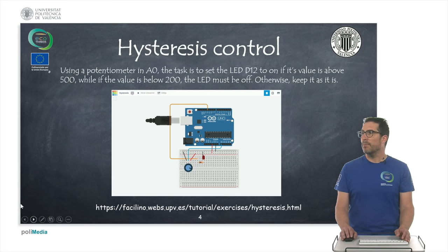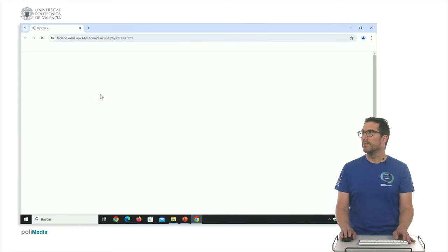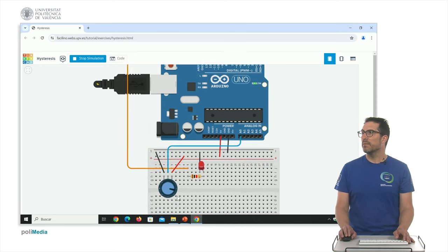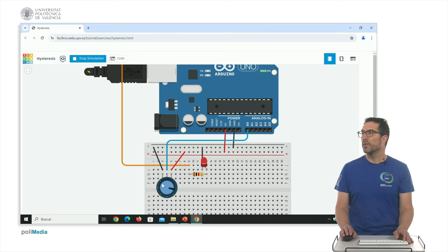Let me run the example so you will see how it works. Let me start the simulation. In this case, because of the position of the potentiometer, 500 is more or less in this position of the wiper. Because of the position of the potentiometer, the LED is on, and only until I move to 200, which will be more or less about this position, the LED will be off.